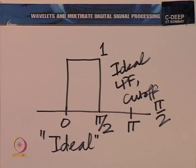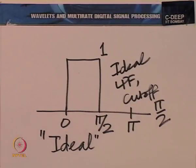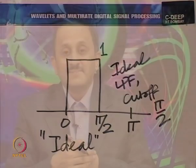Now let me tell you how to build the next member of the Daubechies family. Essentially, to approach an ideal low pass filter with cutoff π/2, we would put one more zero at z = -1 in the low pass filter.